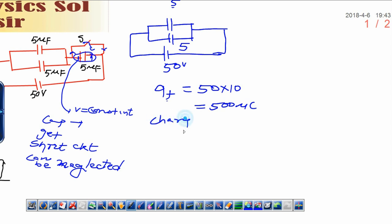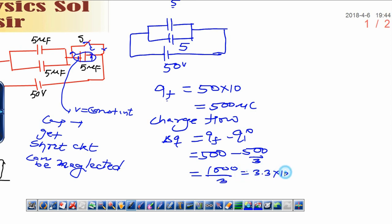Now, we can write the charge flow. Charge flow. I will write it by delta q. That will be, final charge in the circuit, minus, initial charge in the circuit. What is final charge? Final charge is 500. Initial charge is 500 upon 3. And, finally, it will be 1500, that is, 1000, 1000 upon 3. And, which will be, 3.3, 10 raised to the power minus 4 coulomb.